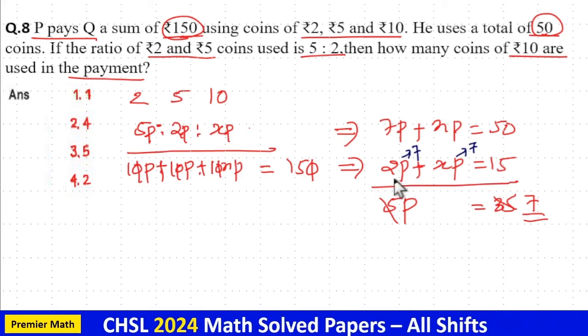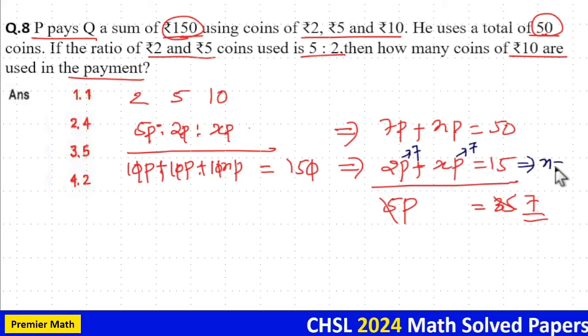That is, 15 minus 14 is equal to 7X, which means X is equal to 1 by 7.